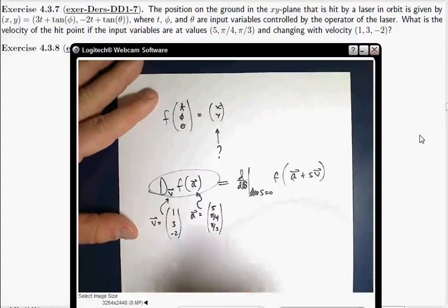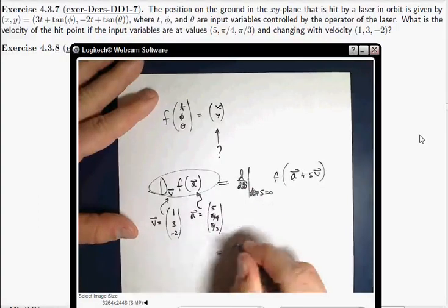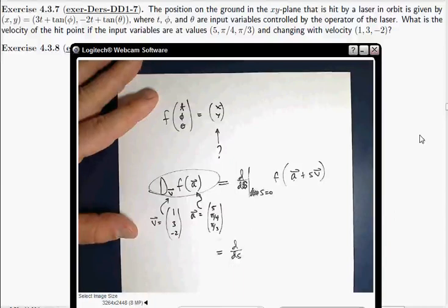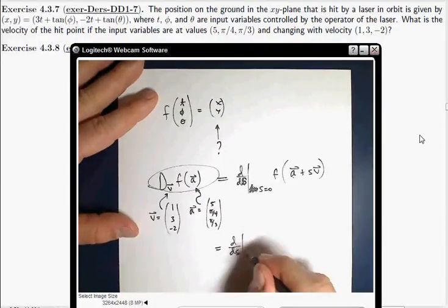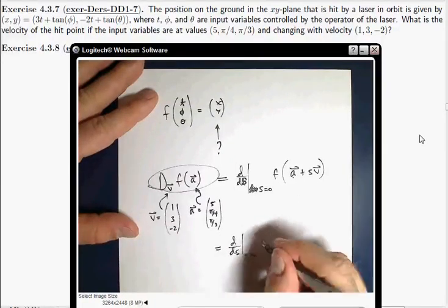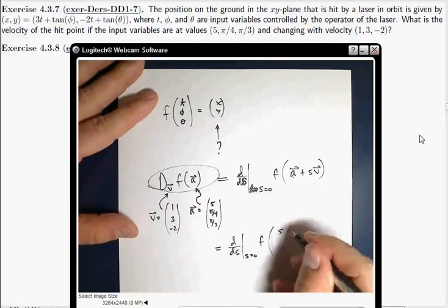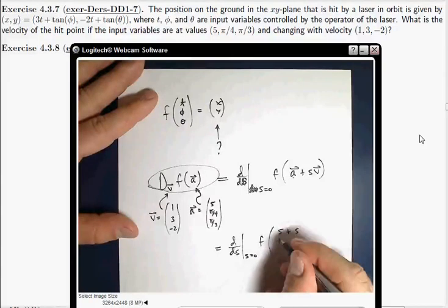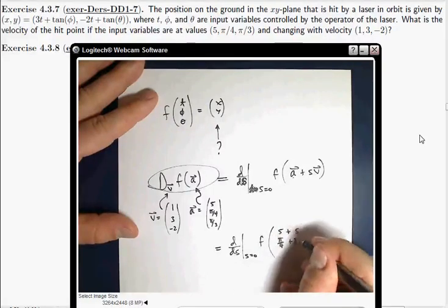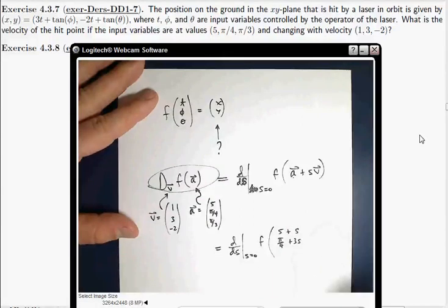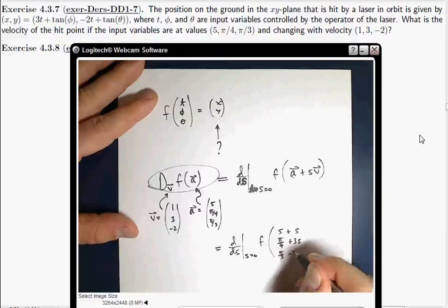I'm looking at the values of the function and seeing how those are changing with respect to S when S is equal to zero. So, okay, so we've got derivative with respect to S. Let's see here. Well, it's going to be F of 5 plus S, pi over 4 plus 3S, pi over 3 minus 2S.